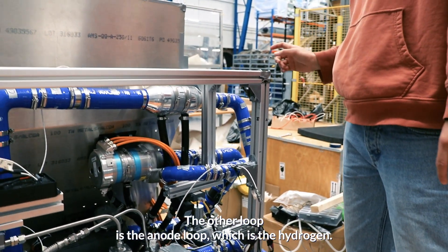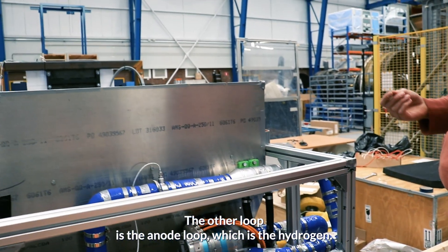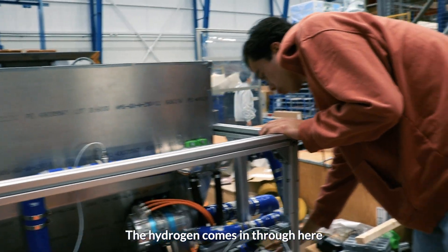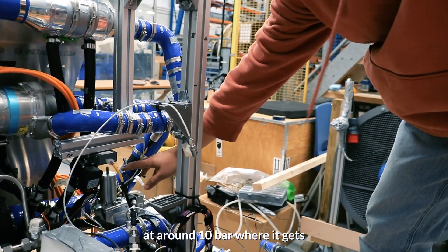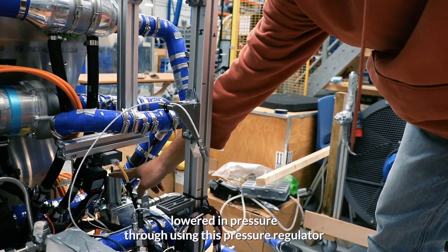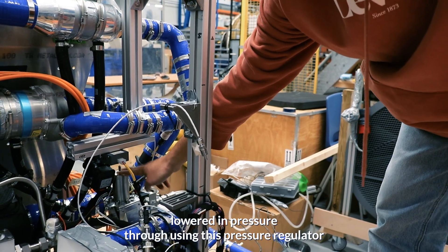The other side, other loop is the anode loop, which is the hydrogen. The hydrogen comes in through here at around 10 bars, where it gets lowered in pressure through using this pressure regulator.